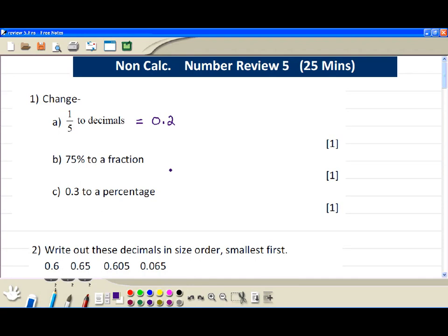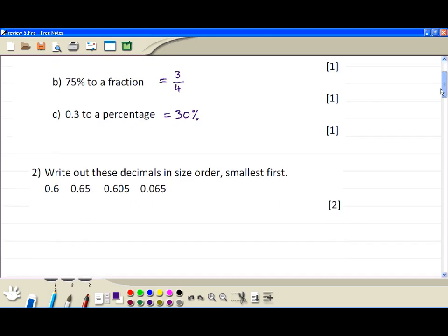75% again is a common percentage which means 75 out of 100, which is three-quarters. To change the percentage, multiply by 100, moving the decimal two places to the right, and it is 30%.